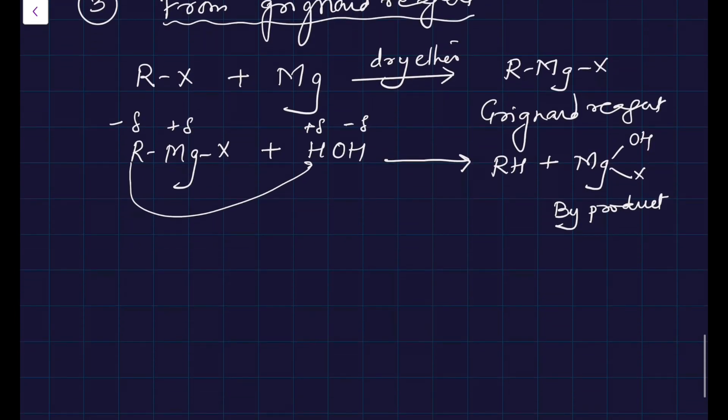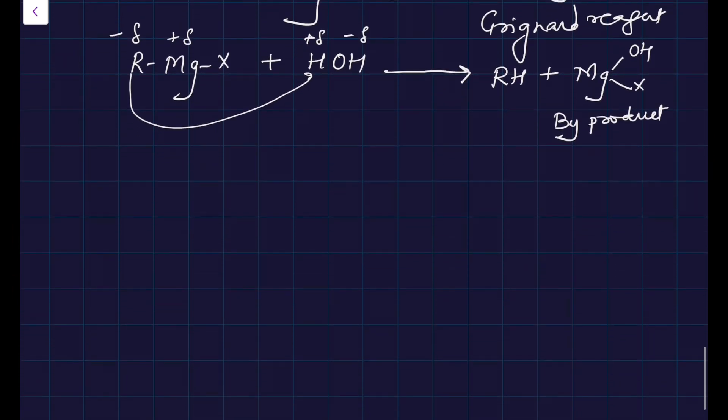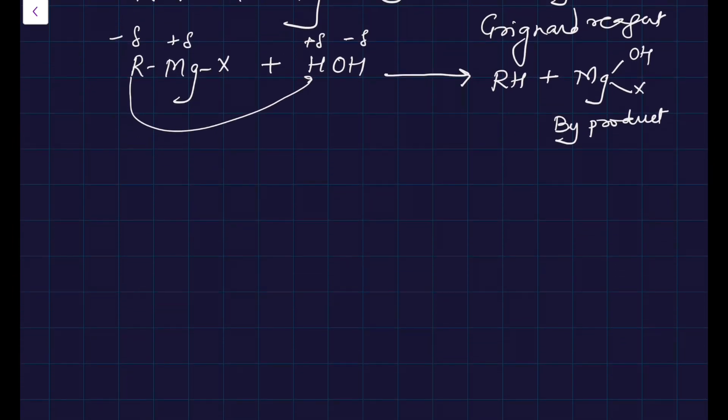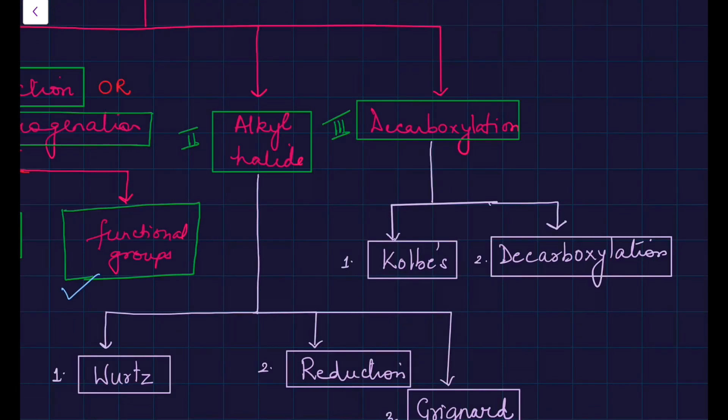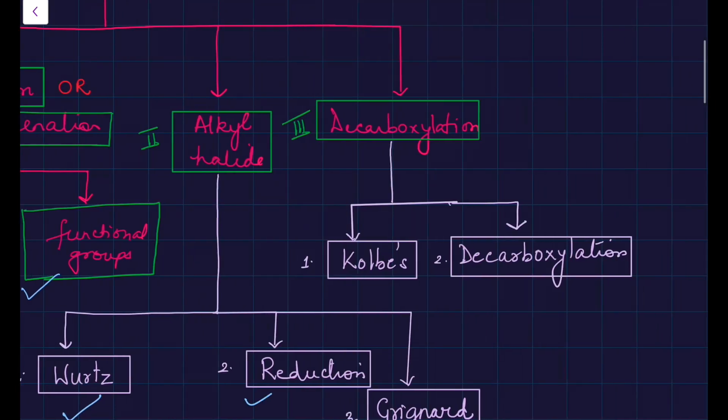So this is how you get alkane from Grignard. This method is also not given in NCERT. We are done with alkyl halides. We have done Wurtz, we have done reduction of alkyl halide, and we have done Grignard.